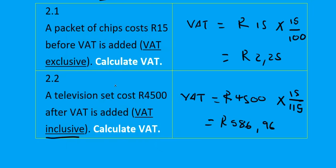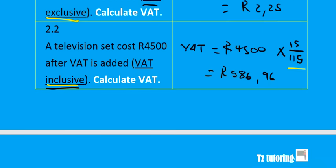The key distinction is: if you are given a VAT-exclusive amount, multiply by 15/100. If you are given a VAT-inclusive amount, multiply by 15/115 to find the VAT component.